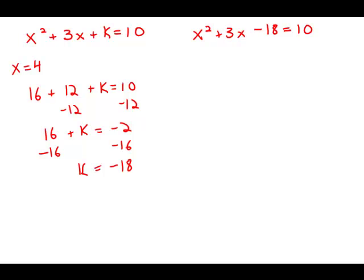x squared plus 3x minus 18 equals 10. Now I'm going to solve this quadratic. You may remember, the very first step in solving a quadratic is to get everything equal to zero. x squared plus 3x, and subtract 10 from both sides, so we get negative 28 equals zero.